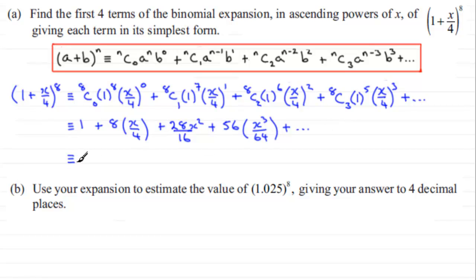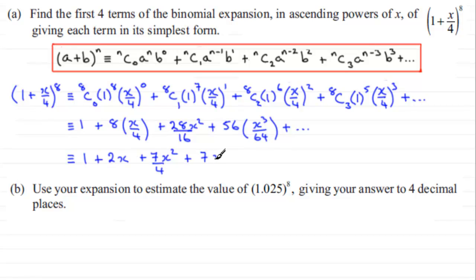After simplifying: 8/4 = 2, giving 2x for the second term; 28/16 simplifies by a factor of 4 to give 7x²/4; and 56/64 simplifies by a factor of 8 to give 7x³/8. So the first four terms are 1 + 2x + 7x²/4 + 7x³/8 + …